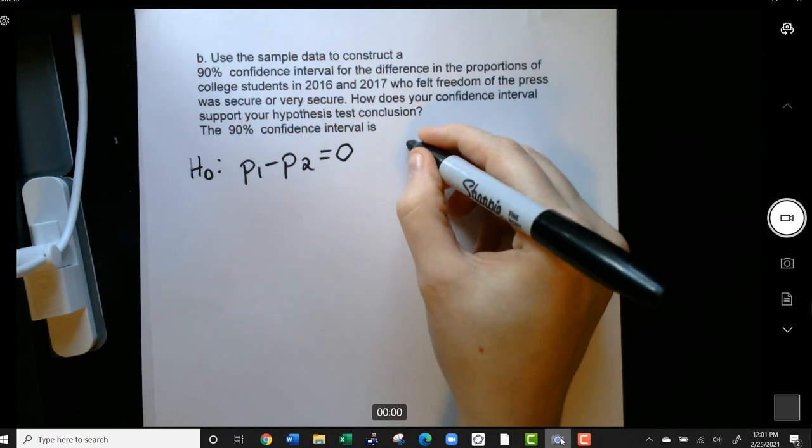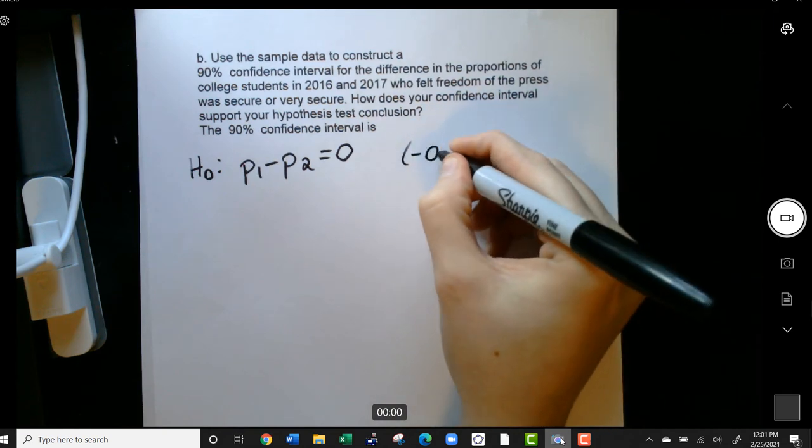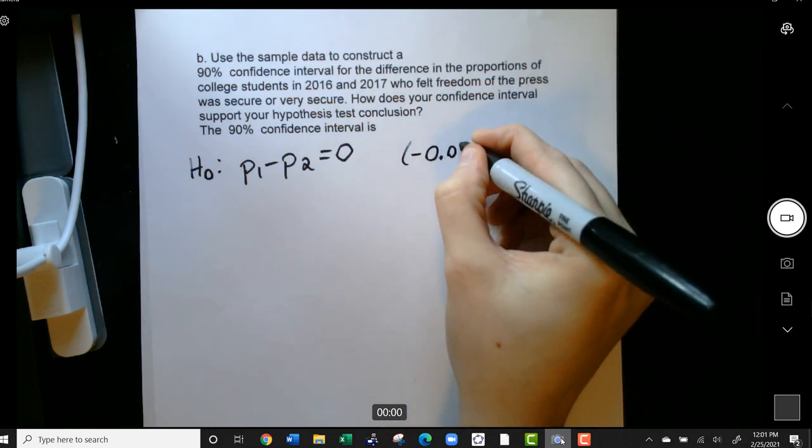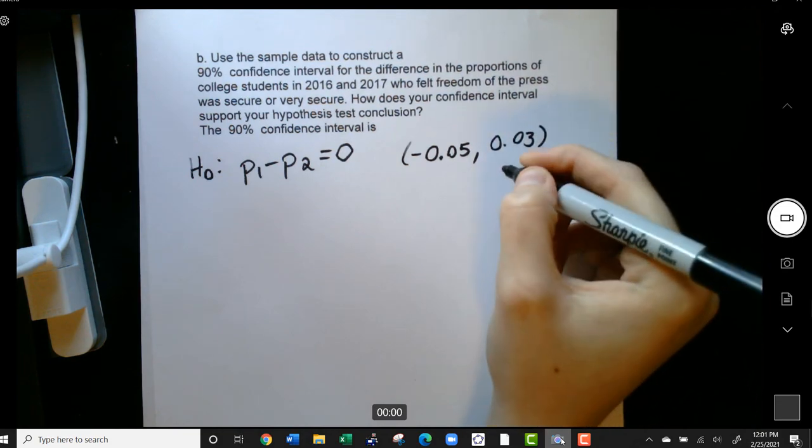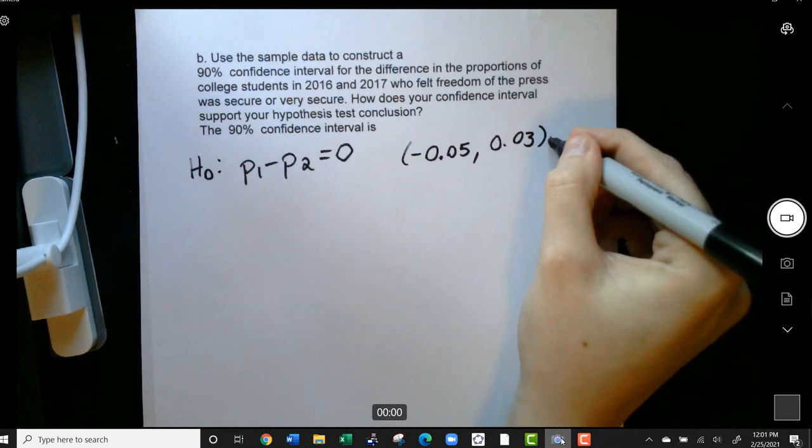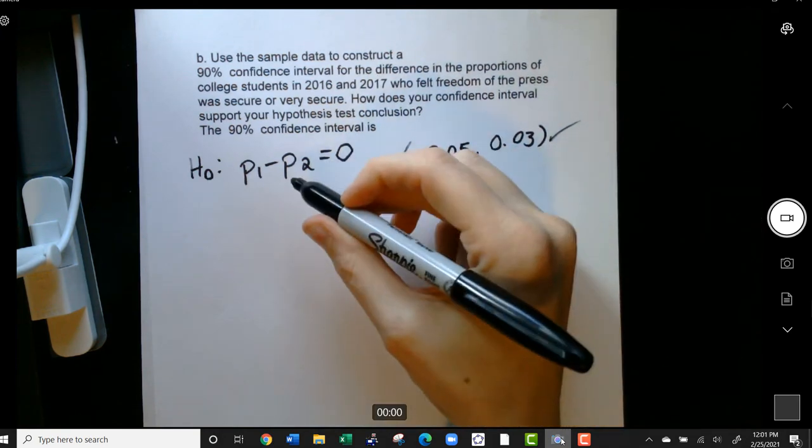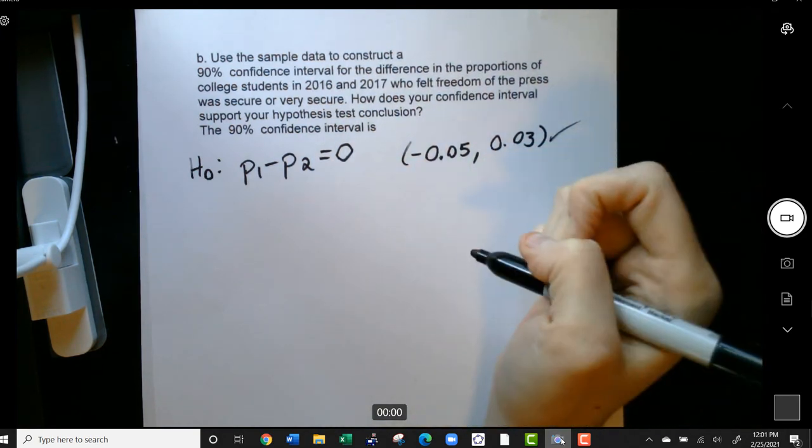So for example, if our confidence interval was between negative 0.05 and positive 0.03, well, zero is on that interval. So that means that our null hypothesis has some standing of being correct.